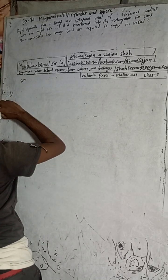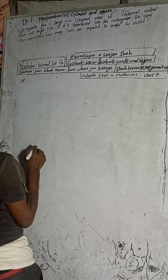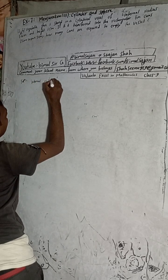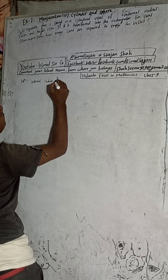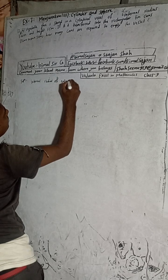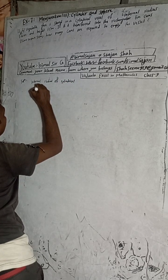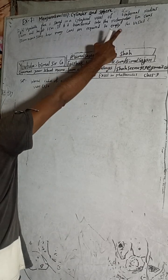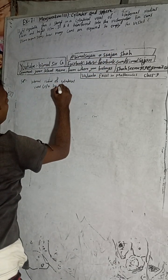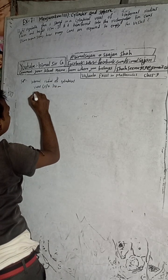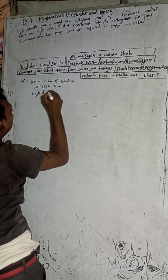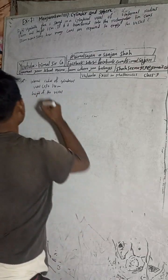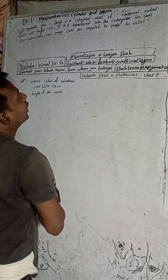Here, vegetable ghee is stored in a cylindrical vessel. The internal radius of the cylindrical vessel r is equal to 1.4 meter.